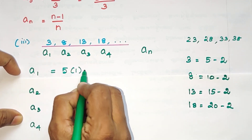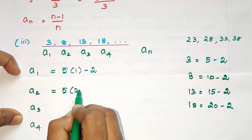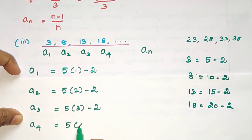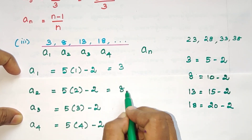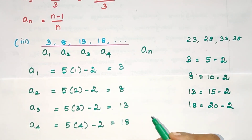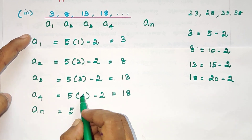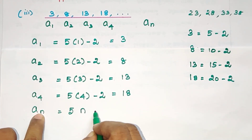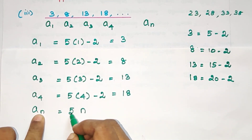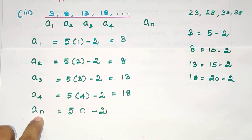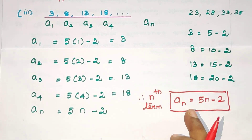So: 5 times 1 minus 2 equals 3, 5 times 2 minus 2 equals 8, 5 times 3 minus 2 equals 13, 5 times 4 minus 2 equals 18. The sequence is 3, 8, 13, 18. So if An = 5n minus 2, and you substitute the number, you will get that particular term. So the nth term An = 5n - 2. That is the answer. Hope you understand. Thank you.